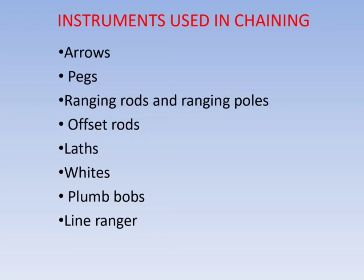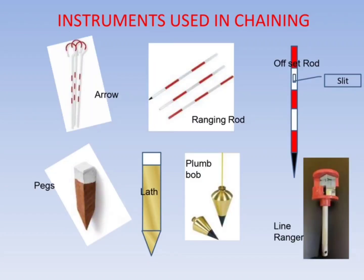Arrows are fixed on the survey line after every chain length or tape length. Pegs are somewhat standard survey stations where wooden pegs are fixed. Ranging rods are used for making straight lines where the line length is more than a chain or tape. Offset rods are used for fixing offsets or perpendicular lines. Laths are wooden sticks painted white on top, generally used in measuring depression areas.